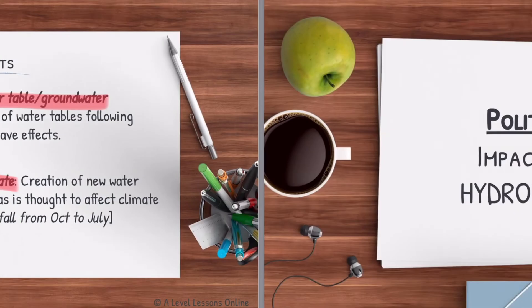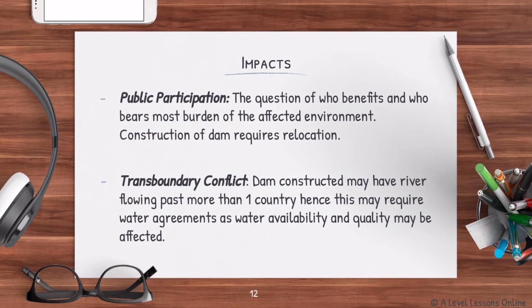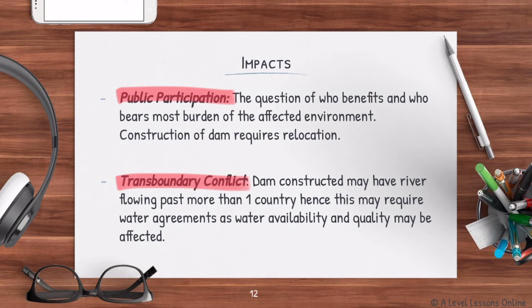For political impacts, the first concern is public participation. When settlements and towns are relocated, people are unhappy, which affects public participation. The second concern is transboundary conflicts — link this to Theme 2. When a dam is constructed from a higher to lower region, water quality downstream deteriorates due to trapped nutrients and increased sediment, causing countries at lower elevations to be unhappy and triggering transboundary conflicts.